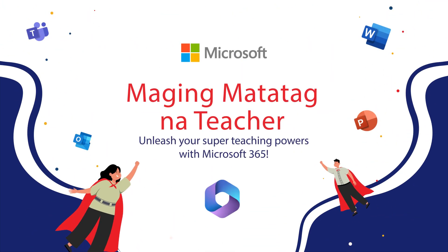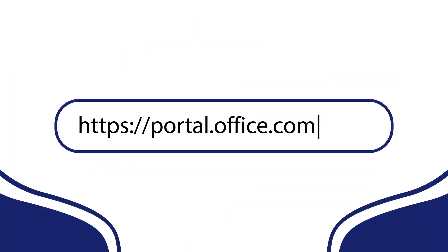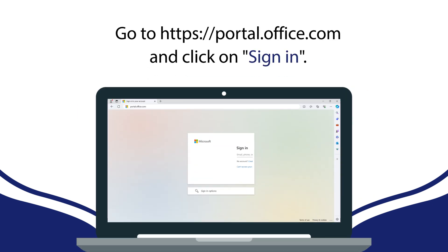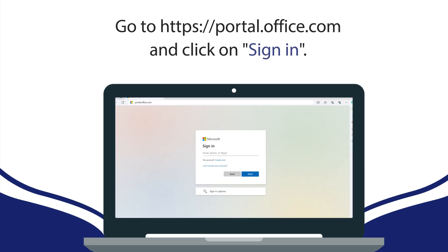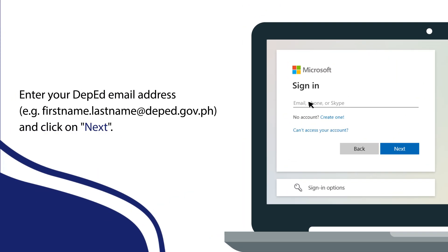Activating your Microsoft 365 account is easy. Go to portal.office.com and select the Sign In button. Enter your DepEd email address — that is first name dot last name at deped.gov dot ph — and click on Next.